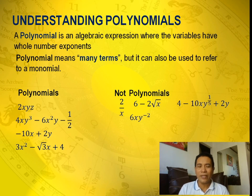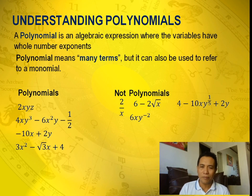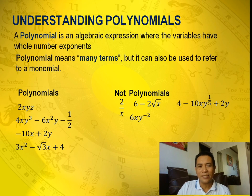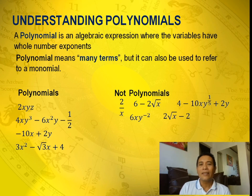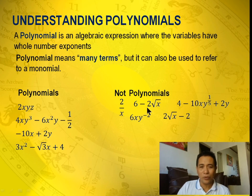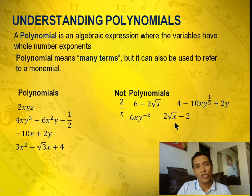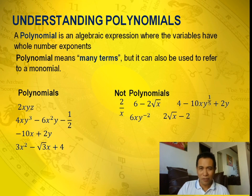6xy raised to negative 2. The exponent is negative 2, and negative 2 is not a whole number, so definitely 6xy raised to negative 2 is not an example of a polynomial. Another example: 2 to the square root of x minus 2. The square root of x converts to x raised to 1 half, and 1 half is not a polynomial.